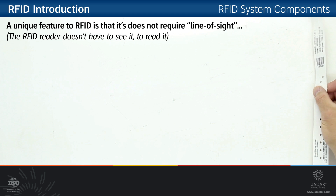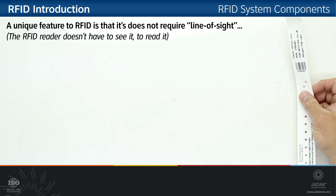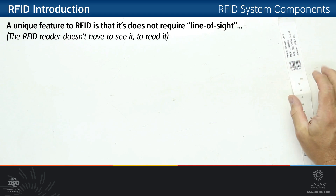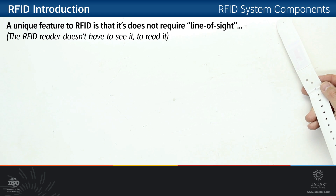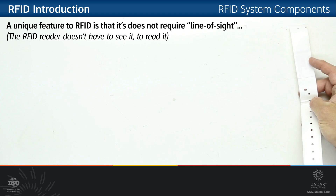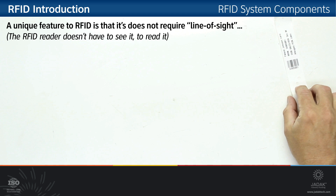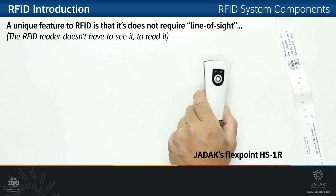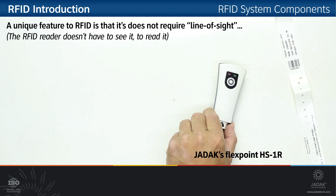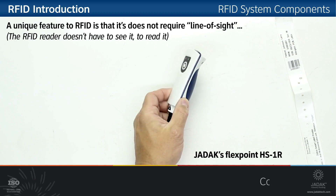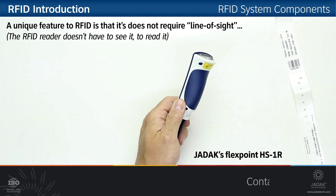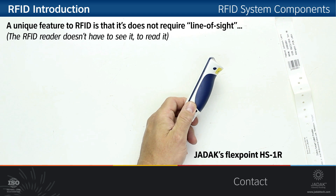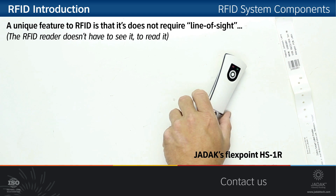Now that we've had a quick look at the two types of RFID tags, let's have a look at a complete RFID system. Starting with a tag — in this case an embedded RFID tag in a patient wristband, located right there in that area — you need a transceiver or RFID reader to then activate that tag and read that information. In this particular case, this is the Jadex HS1R, which is both a 2D barcode imager as well as an RFID reader.